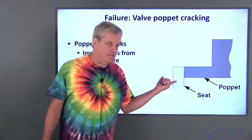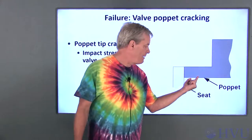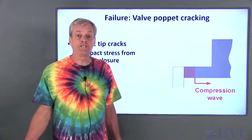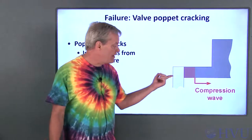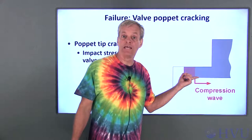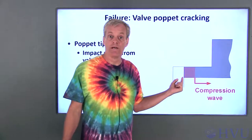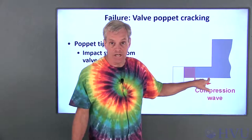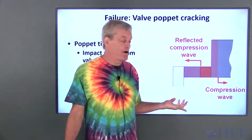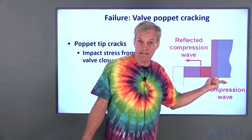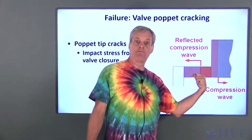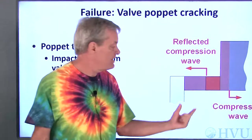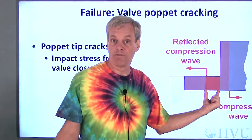This is a close-up of the contact area between the poppet and the seat. The cracks were in the nose of the poppet here. The initial impact caused a compression stress wave to propagate into the nose. This wave propagated along the nose until it hit an area change. The area change caused part of the wave to transmit into the next stage of the poppet, but most of it reflected back into the nose.